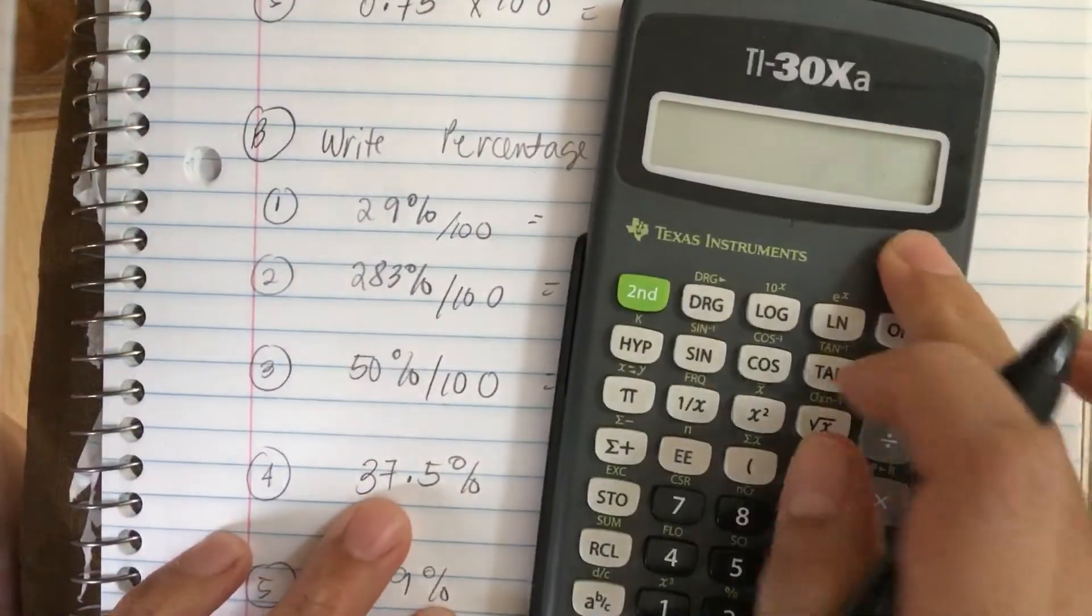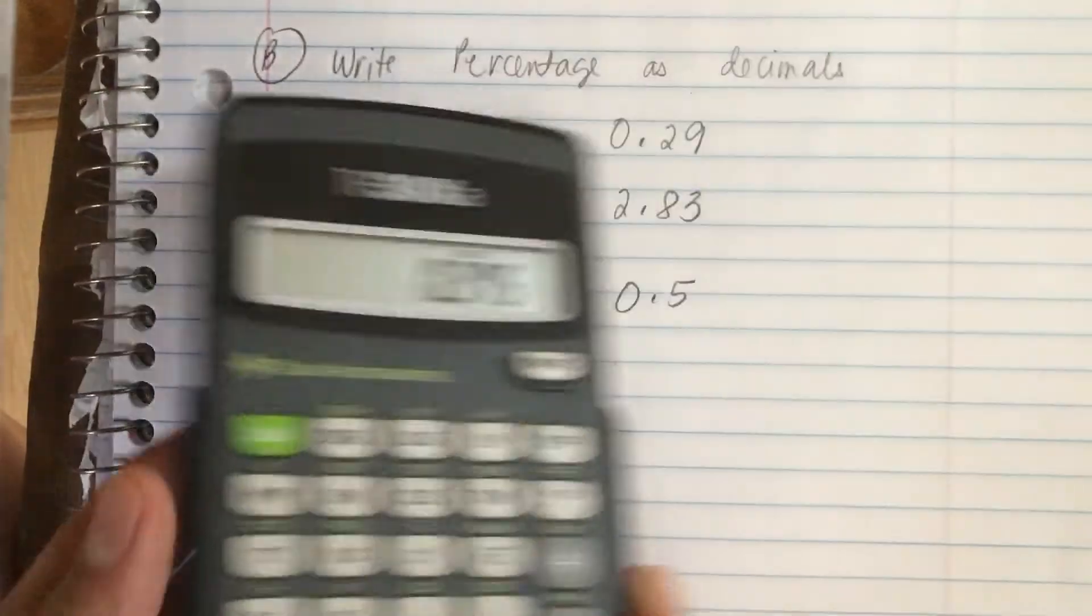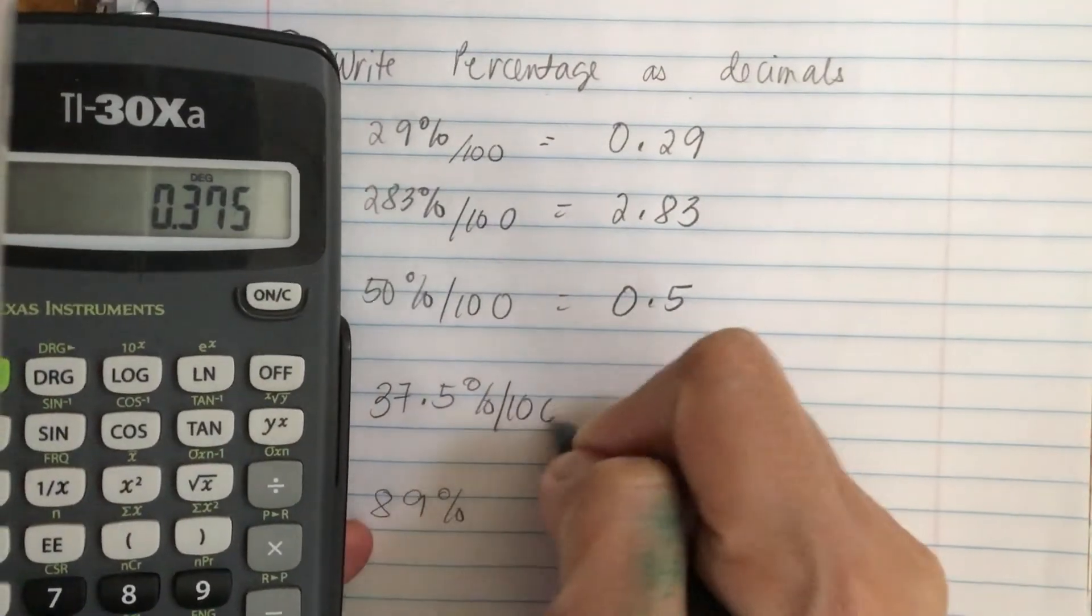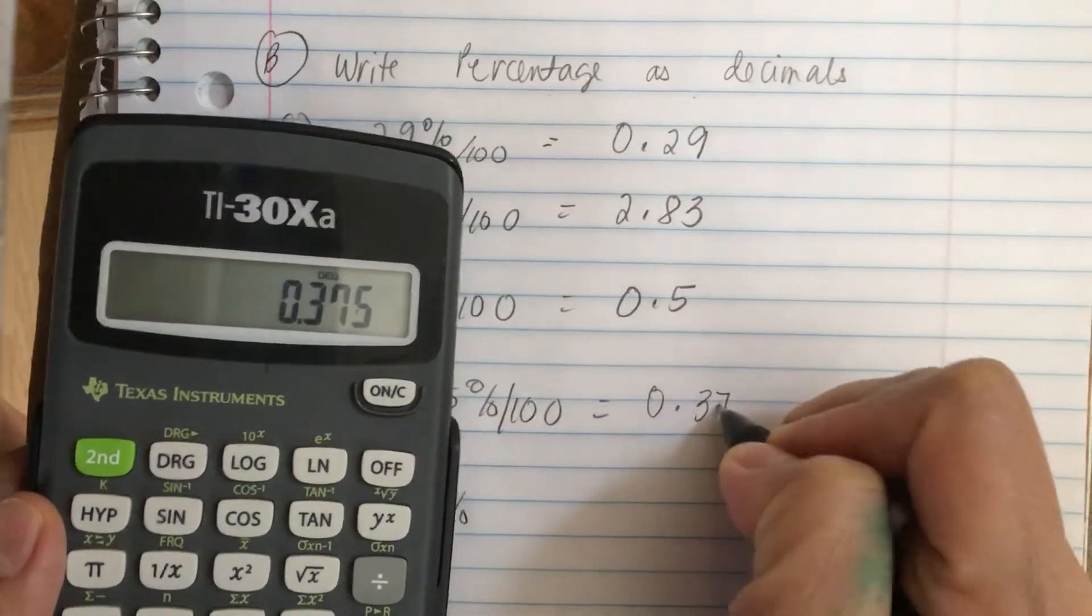So we got 37.5 divided by 100. This is 0.375.